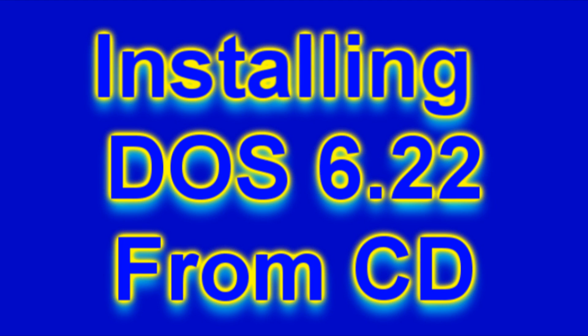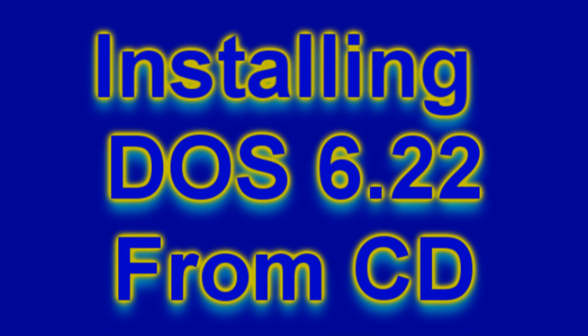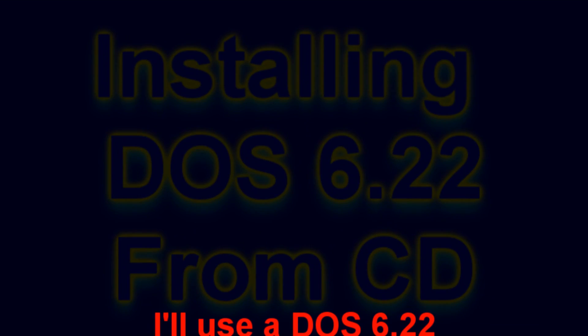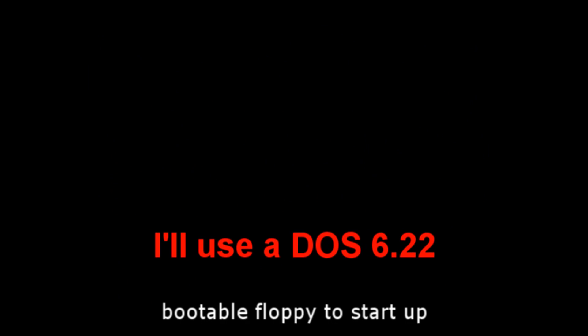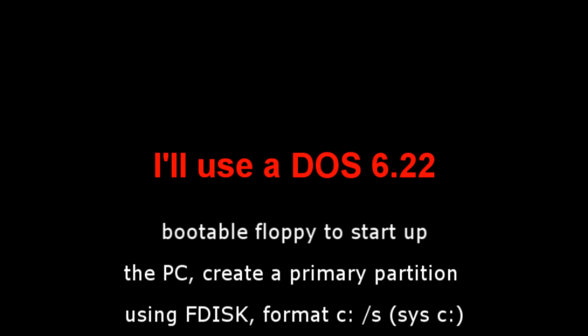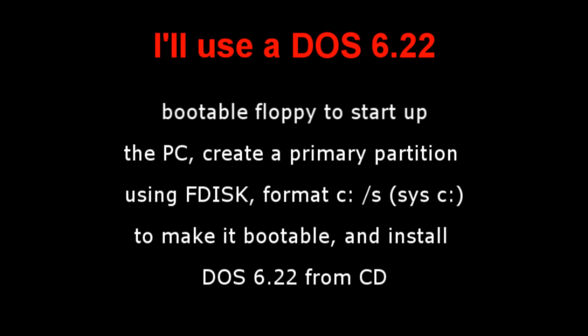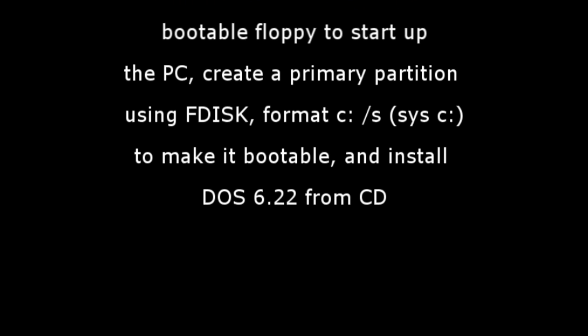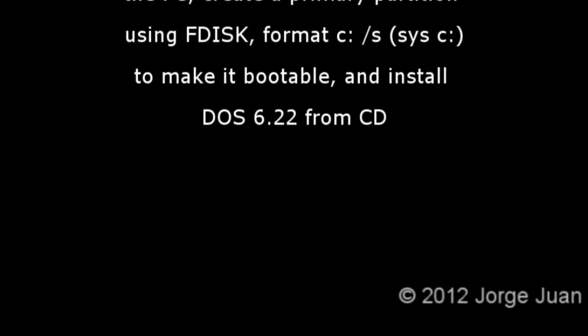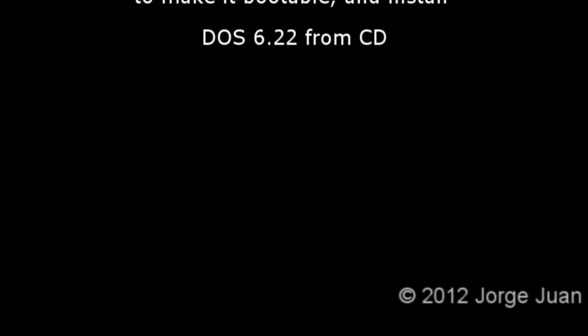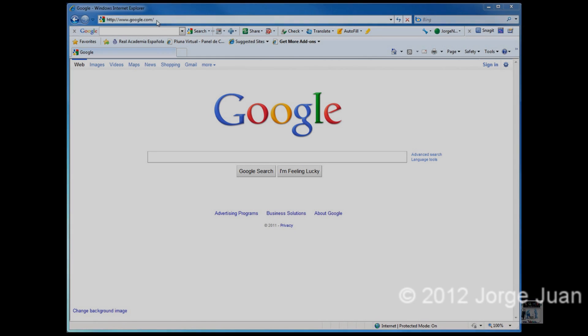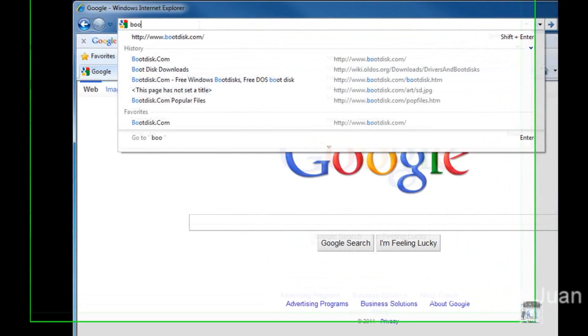Well hello YouTube. I'm going to be installing DOS 6.22 from a CD. First we will need a DOS 6.22 bootable floppy to start up the computer. Then I'll create a primary partition using FDisk. Then I'll format the drive with the /S command to copy the system files from the floppy drive to the new C drive, making the C drive bootable. And then I'll complete the installation from the CD.